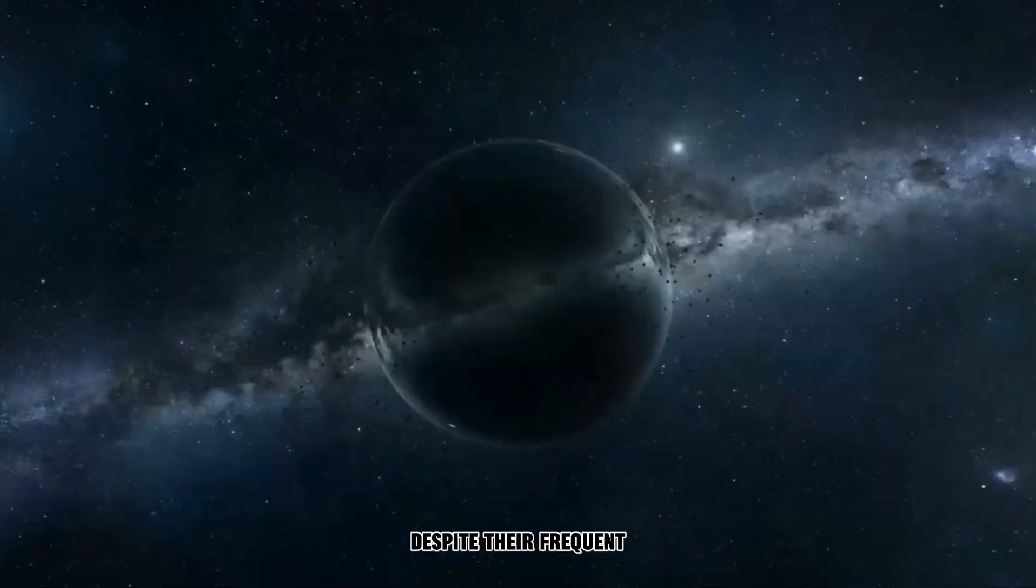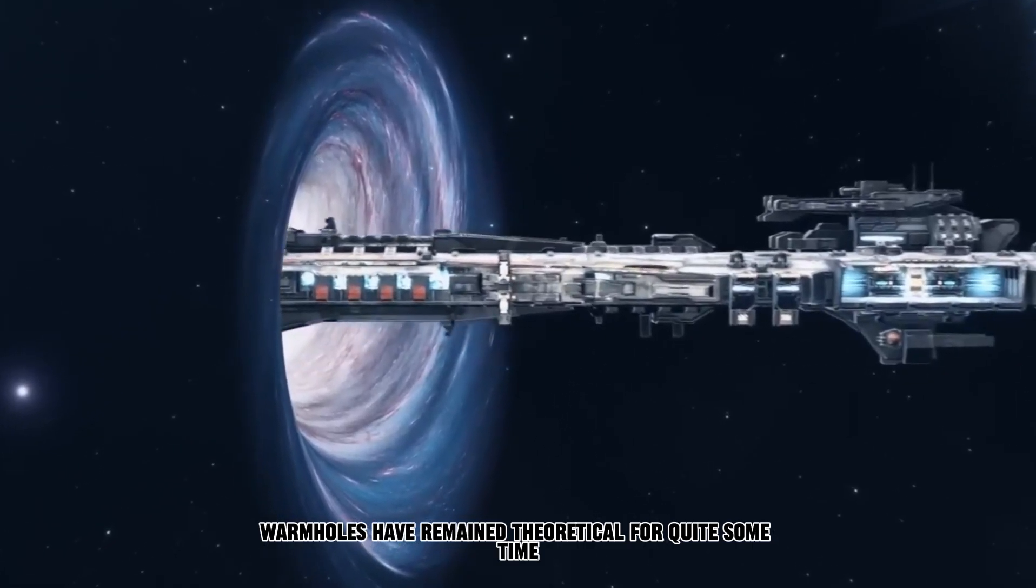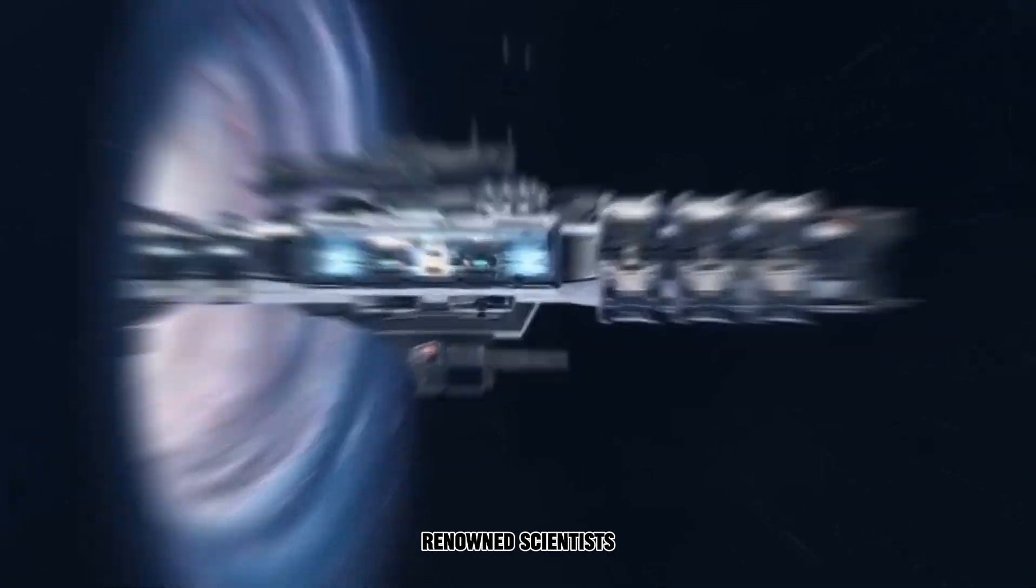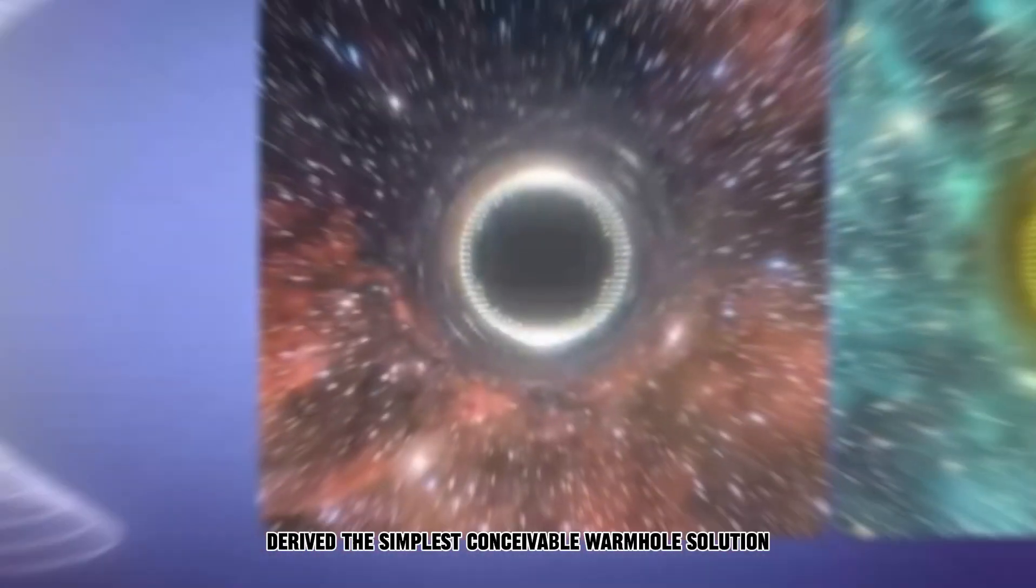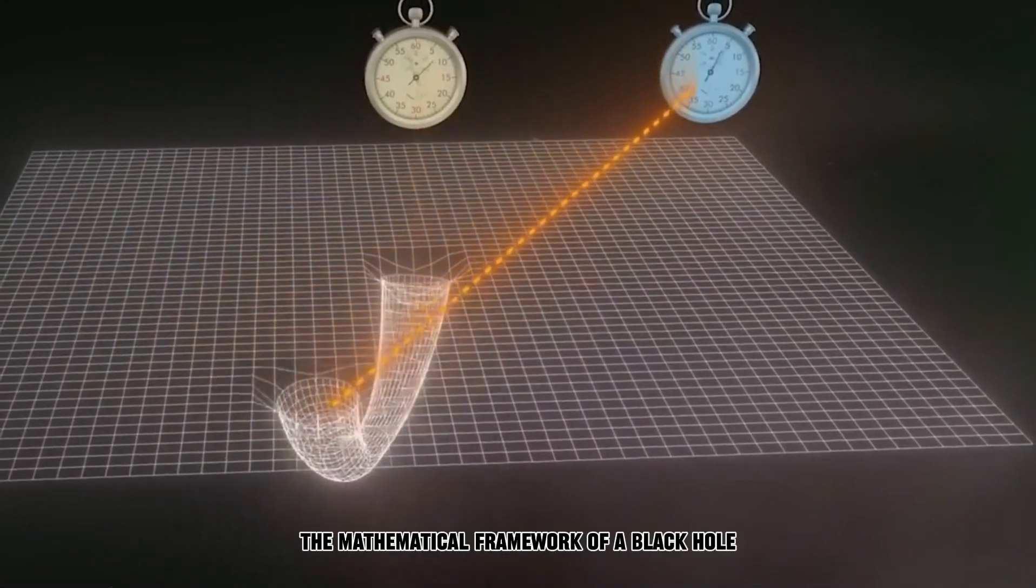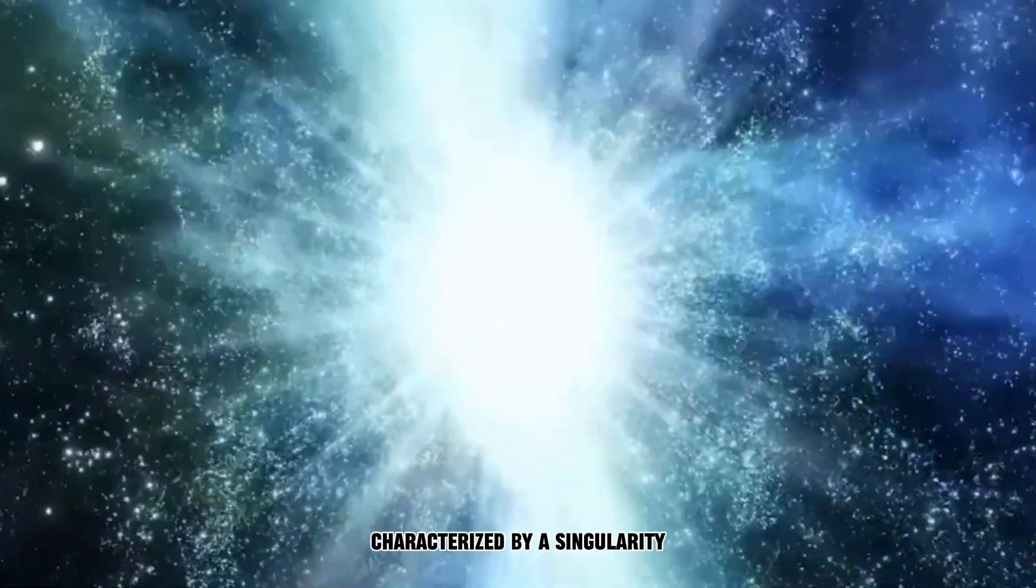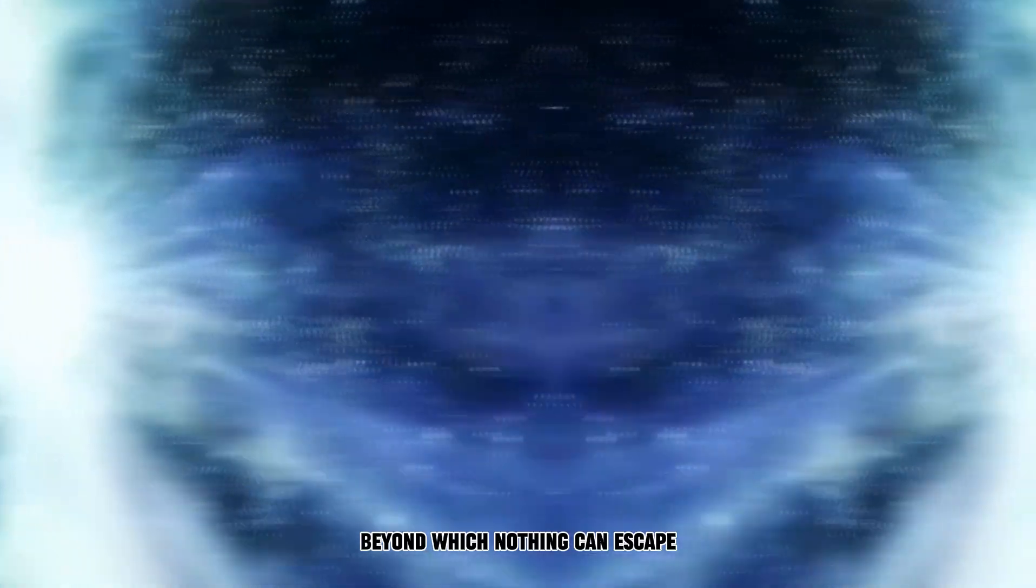Despite their frequent appearance in science fiction, wormholes have remained theoretical for quite some time. This stems from the fact that in 1935, renowned scientists Albert Einstein and Nathan Rosen derived the simplest conceivable wormhole solution by building upon the mathematical framework of a black hole, a phenomenon characterized by a singularity or infinitely dense point and an event horizon beyond which nothing can escape.